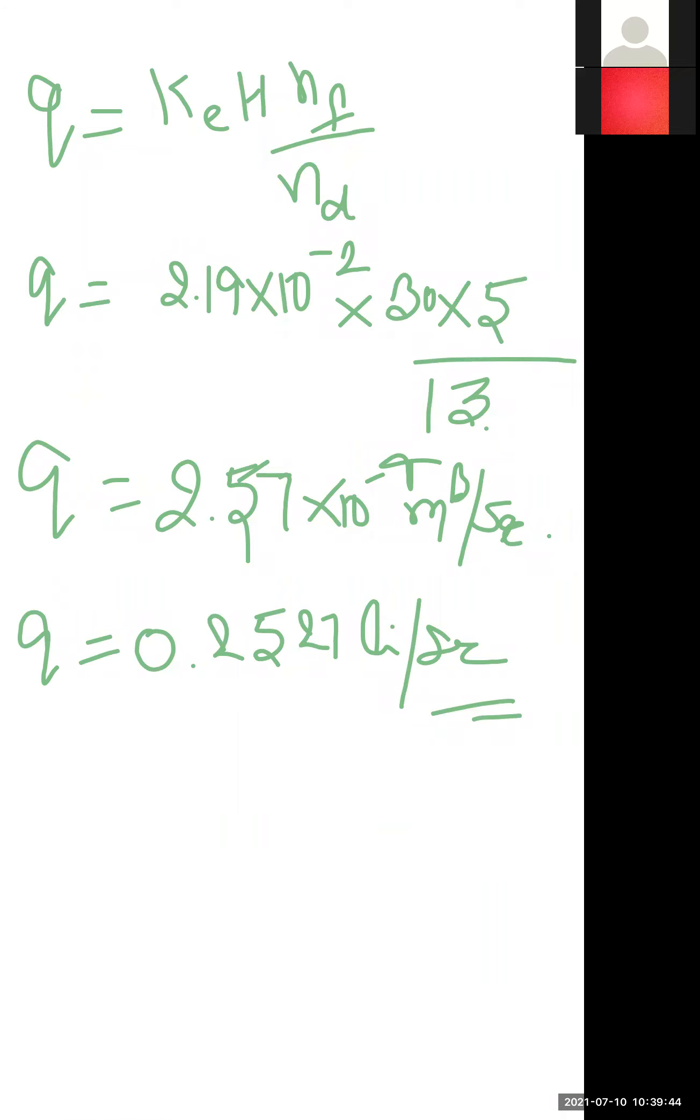Also, if stratified conditions are given or a flow net is given in non-homogeneous sections, in that condition we correlate k1 and k2 with alpha1 and alpha2 as tan alpha1 and tan alpha2.